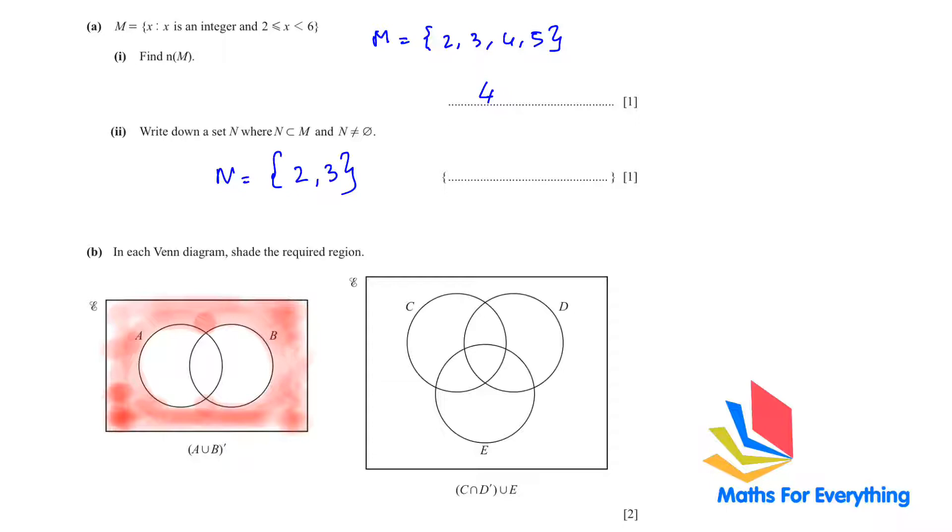Next we have C intersection not D union E. C intersection D complement is the part which is only C and not a part of D. And this part joins with union E, so whatever is in E we are going to join it with what we have shaded already. This whole thing is our answer.